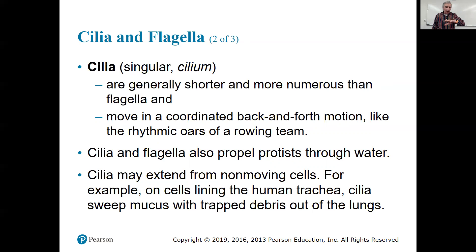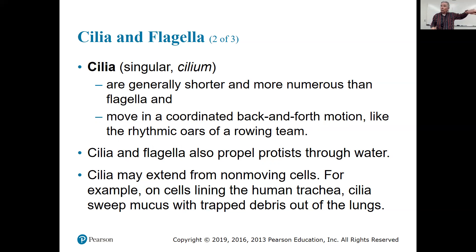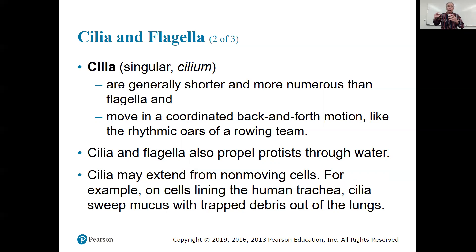Cilia are also found in female physiology — the fallopian tubes are ciliated. The egg, or oocyte, pops out of the ovary and is caught by what's called the fimbria, which are cilia that bring the oocyte in and move it along the fallopian tube towards the uterus. Oocytes can't move on their own — they don't have flagella. If there's sperm in the fallopian tube, fertilization takes place there, and the resulting zygote moves down and implants in the uterus.